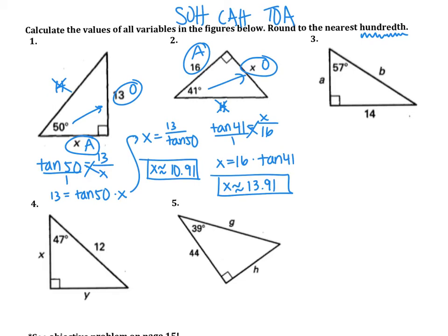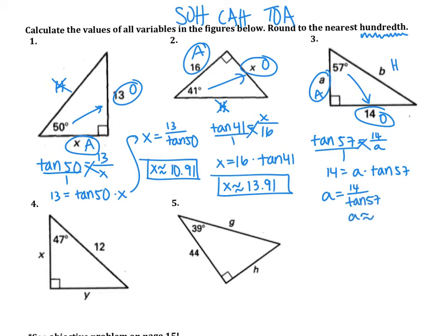We're going to do one more example together, and then you're going to try examples 4 and 5. Question 3, we actually have to find two sides, not just one. Label the sides you know. So we have O, we have A, we have H. If I want to find little a first, so if I want to find that side first, I'm going to use the side I want and the side I know. So O and A, again, is tangent. So we have tangent of 57 is 14 over A. Again, put this over 1 and cross multiply. 14 is equal to A times the tangent of 57. So A will be 14 divided by the tangent of 57, which is about 9.09.